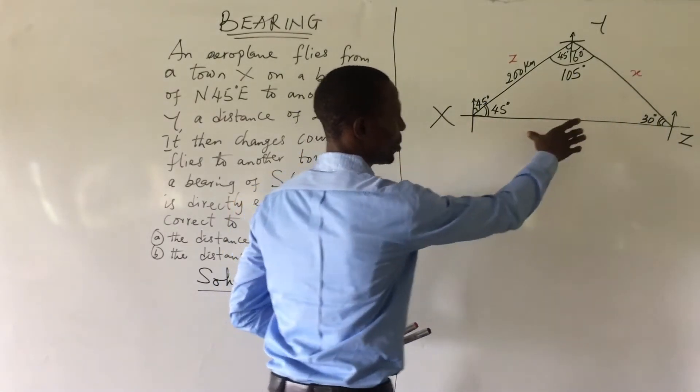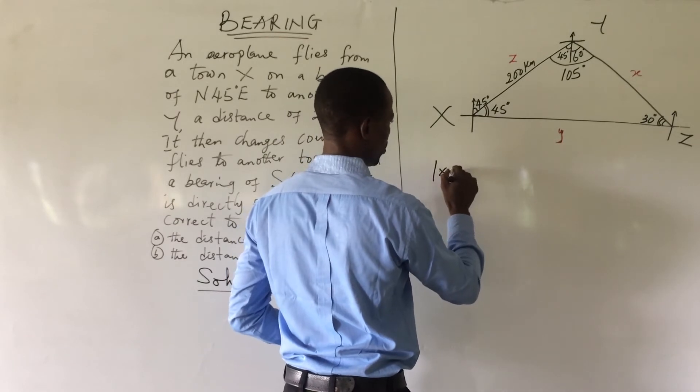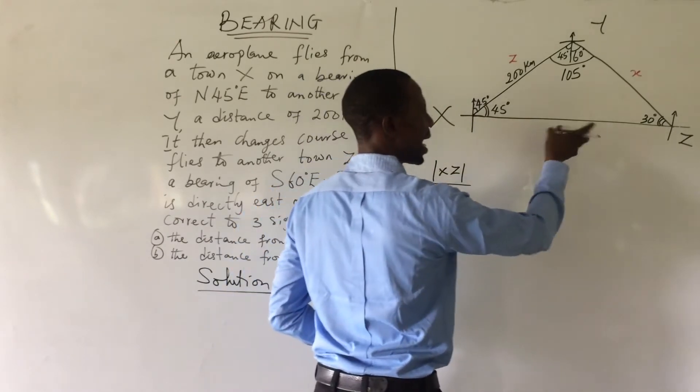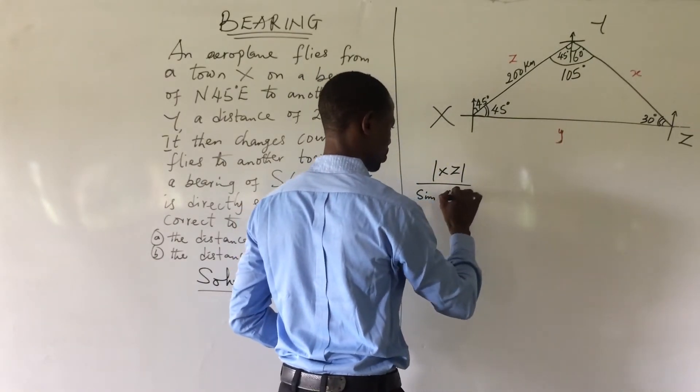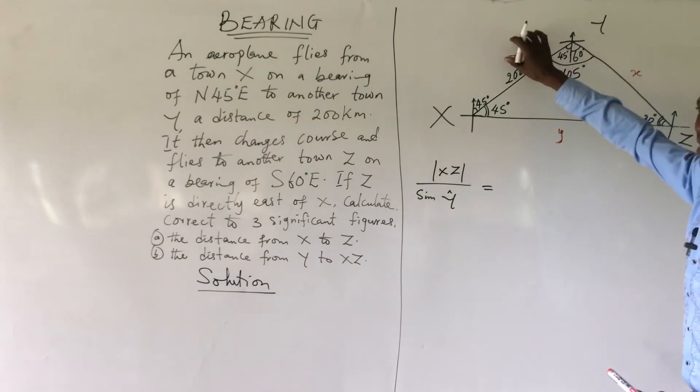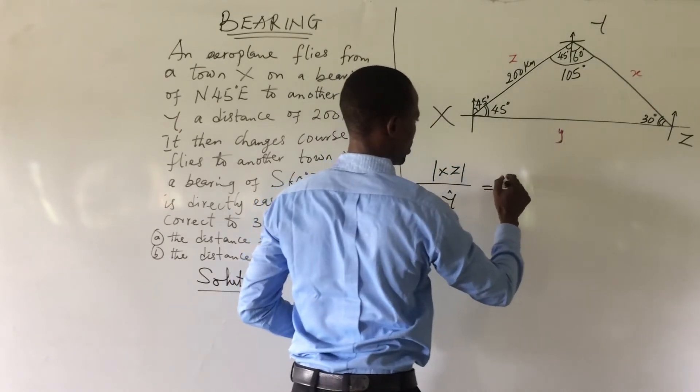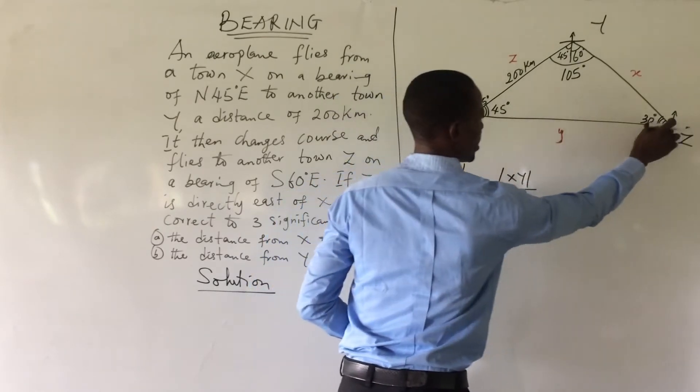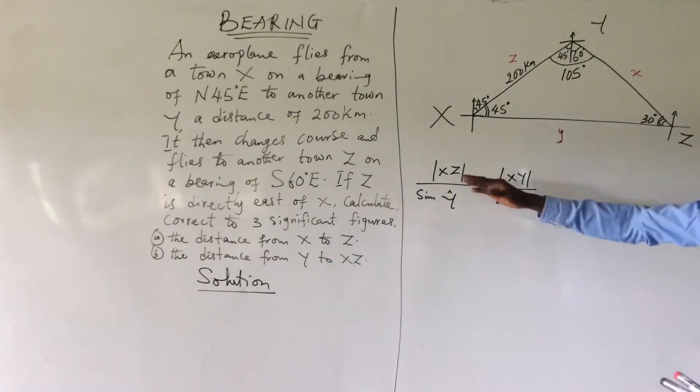We are going to take this side, which is our y. This gives us XZ over sine, the angle facing the whole of this direction is this Y, which is sine capital Y, equal to, we take this one that the angle is given and the side is also given. This side of it is XY. This gives us line XY over sine Z. Now that we have this, we can now compute their figures.